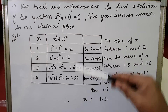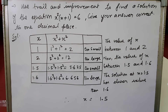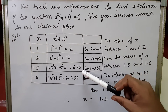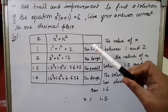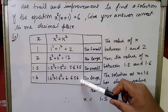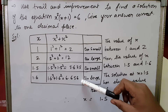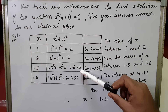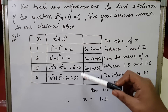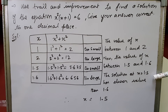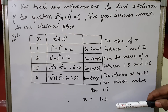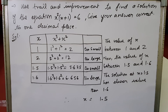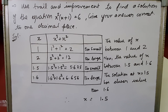When we put x = 1.6, we get 6.656, which is too large. Now we compare: the difference at x = 1.5 from 6 is 0.375, and the difference at x = 1.6 is 0.656. We can subtract these values from 6 to find which is closer. Since 1.5 gives a closer value, the solution of the equation is x = 1.5.